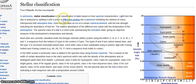In astronomy, stellar classification is the classification of stars based on their spectral characteristics. Light from the star is analyzed by splitting it with a prism or diffraction grating into a spectrum, exhibiting the rainbow of colors interspersed with absorption lines.